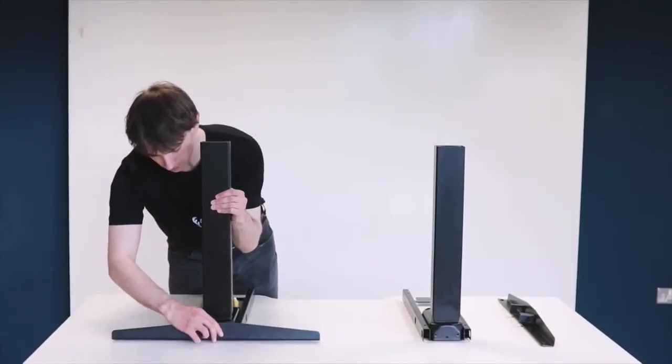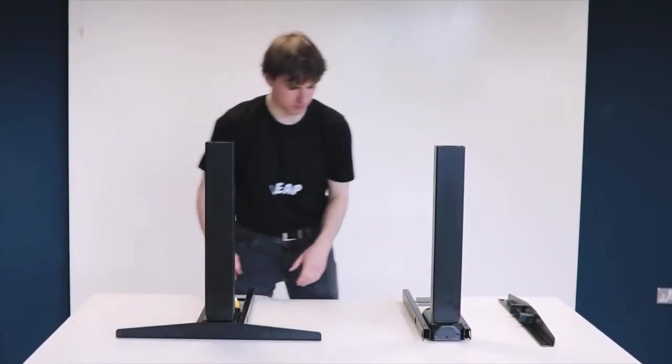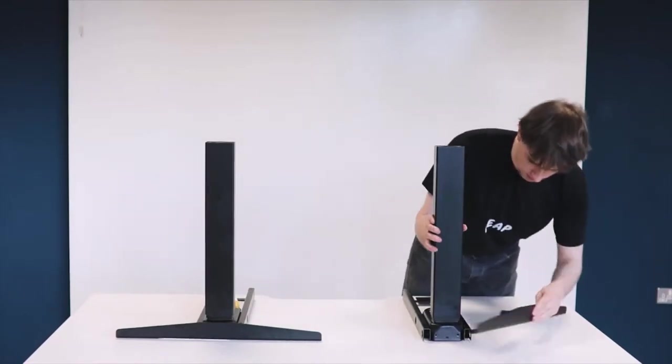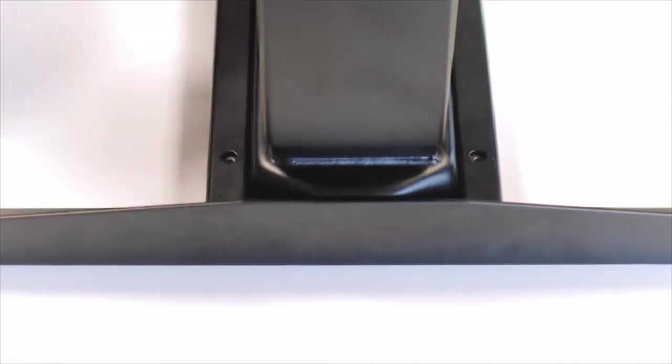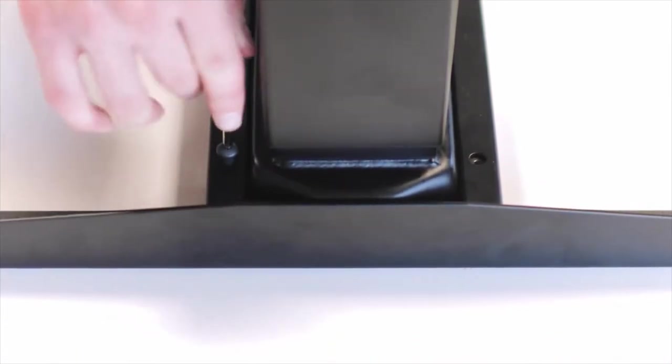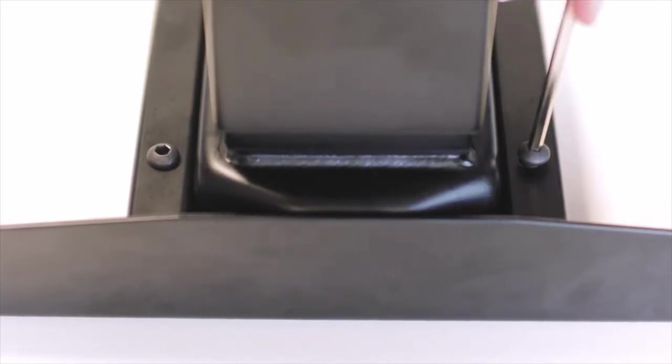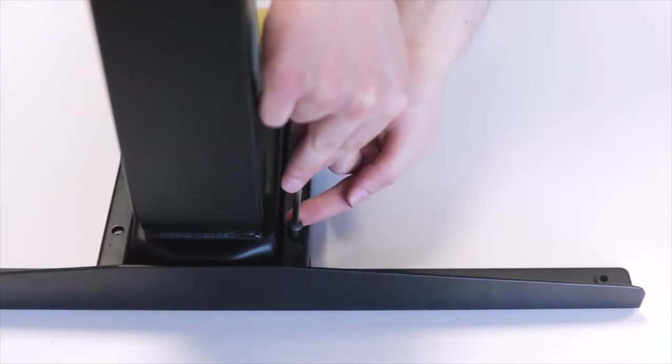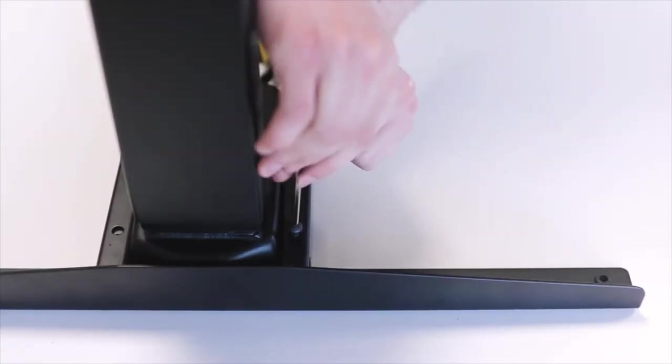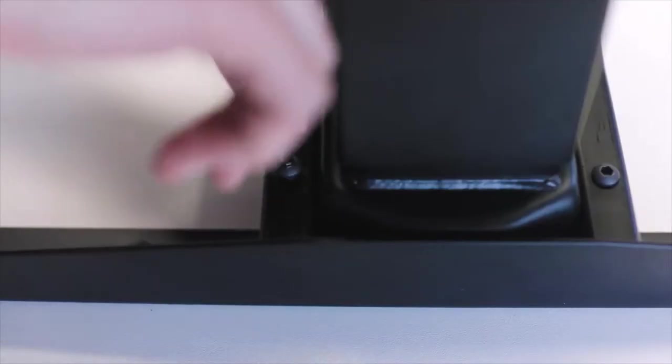Place the side bracket next to the leg making sure that the longer side of the bracket is facing towards the front of the desk. Insert four of the larger machine screws into the holes using the allen key that is provided. Again, rotate these a few times without fully tightening the screw. Repeat this process for the other leg.